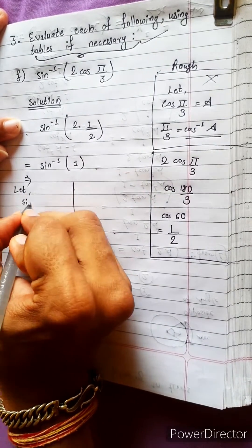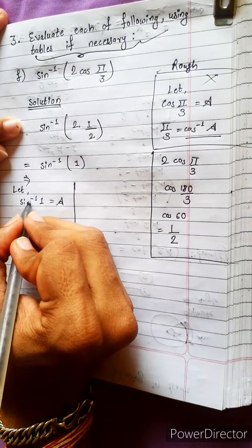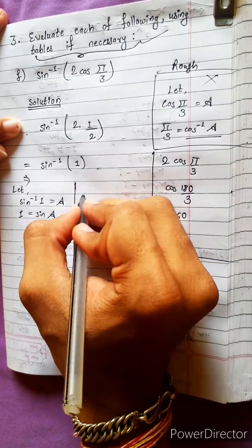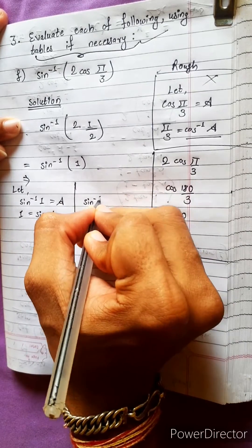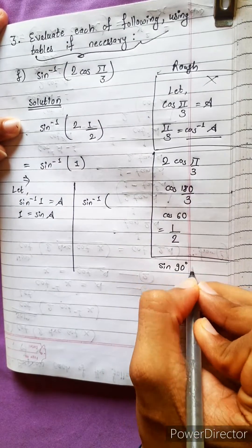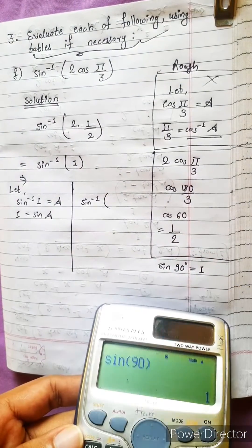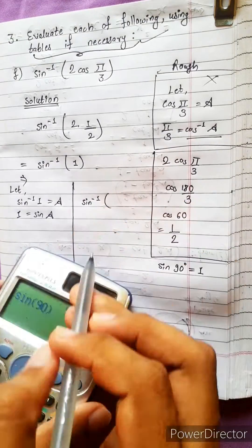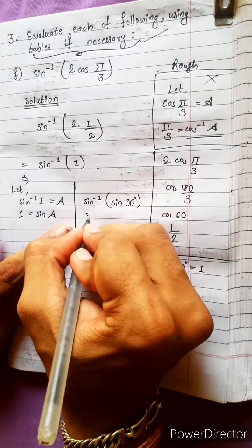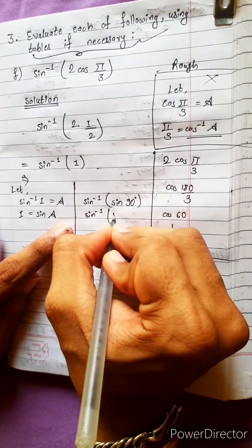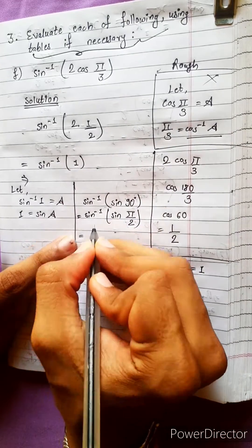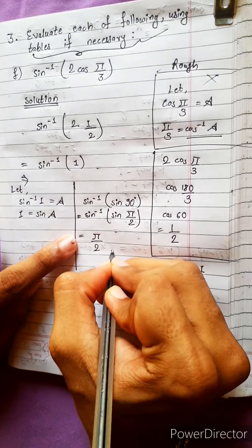Let sin⁻¹(1) equal a, so 1 equals sin(a). Since sin(90°) equals 1, we have sin(90°) = 1. Therefore sin⁻¹(1) = π/2. The sin cancels directly, giving the answer π/2.